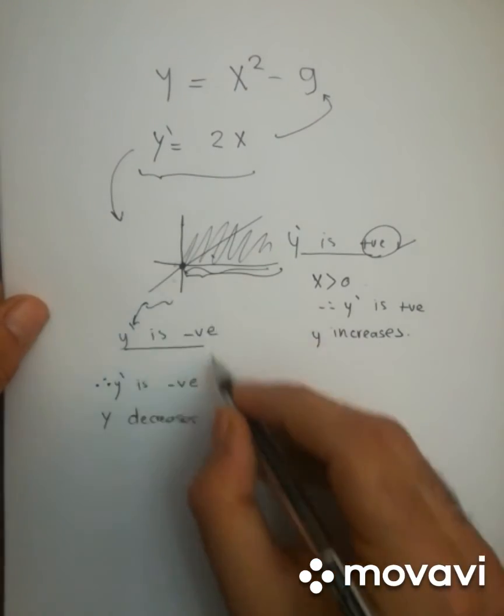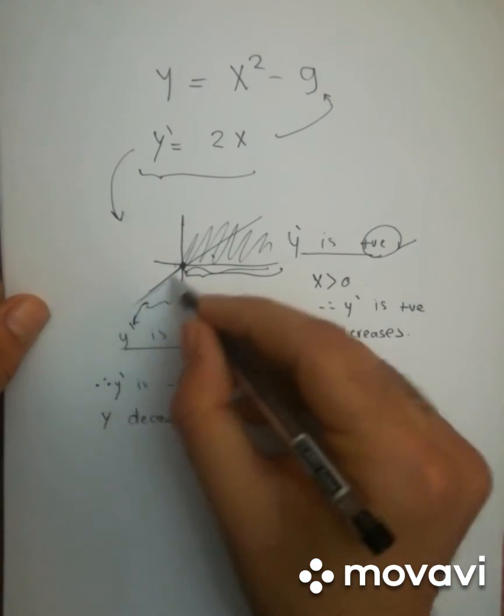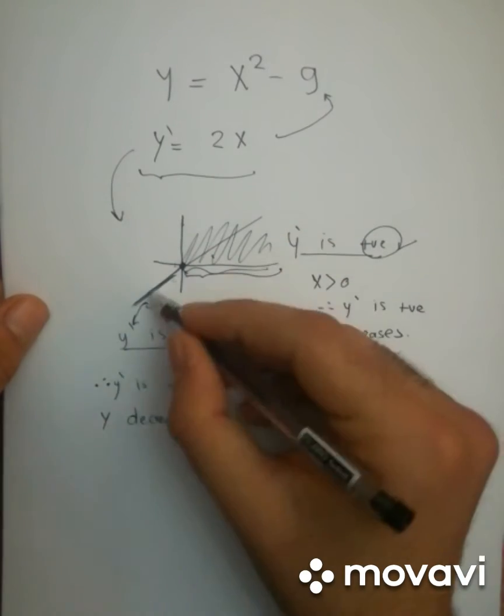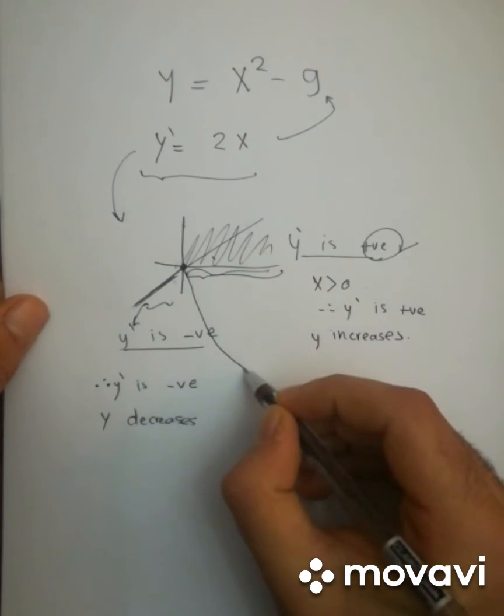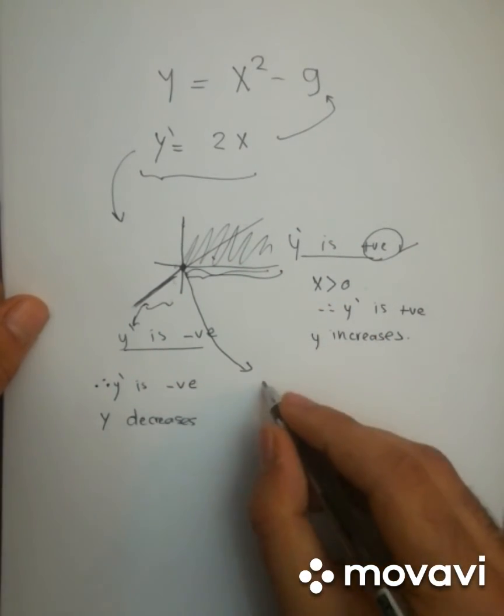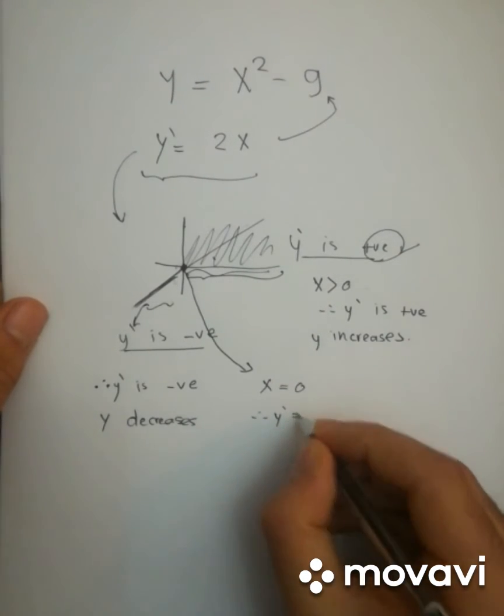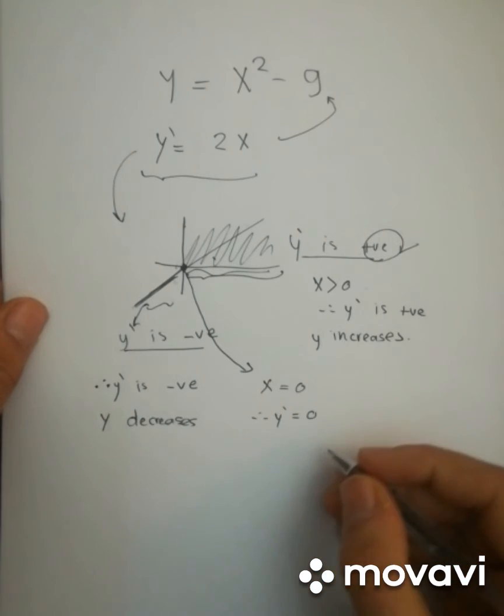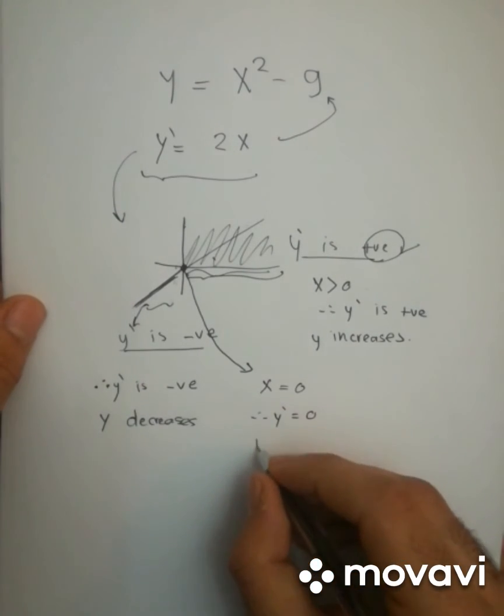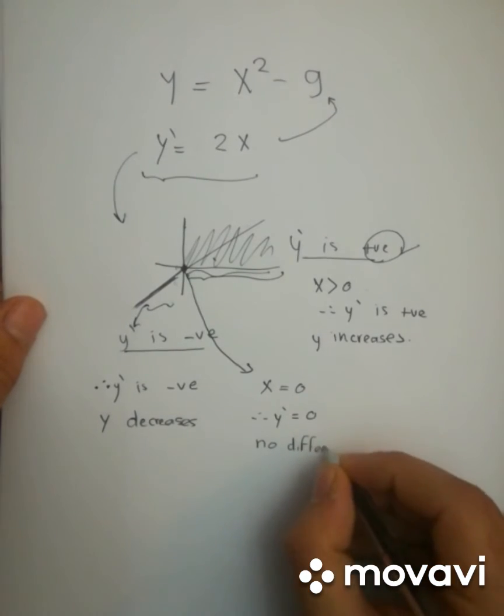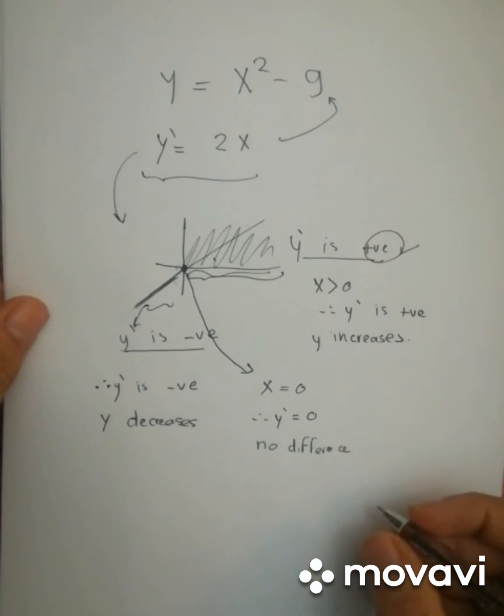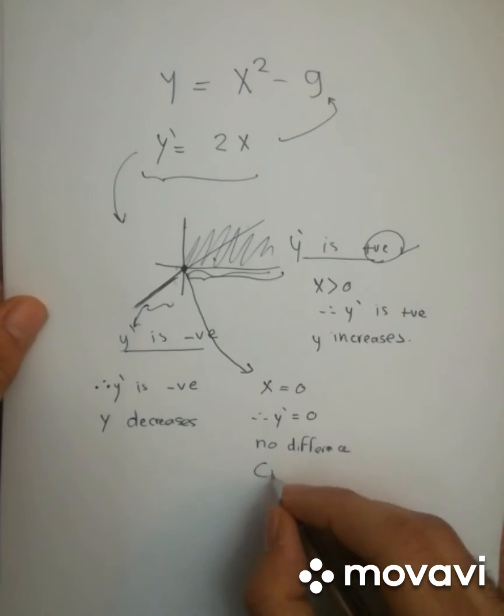And the slope right over here at x equals 0. At x equals 0, since y-dash is equal to 0, there is no increase, there is no decrease. And so there is no difference. And this is what calculus people would say a critical point.